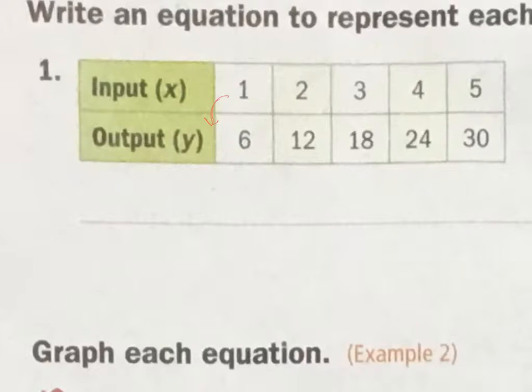So one, I'm going to say it's one times six. Let's see if that works for everything. Two times six is 12. Three times six is 18. Four times six is 24. And five times six is 30. So y equals six times x.